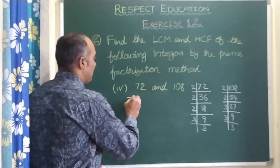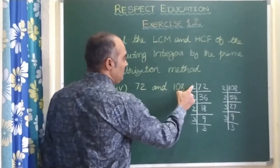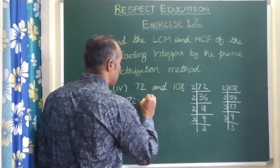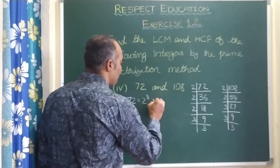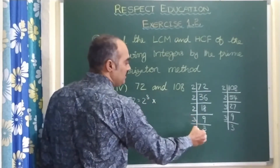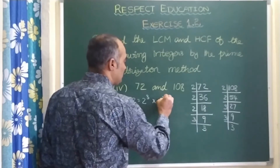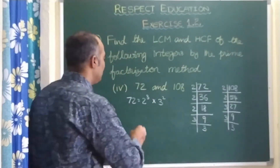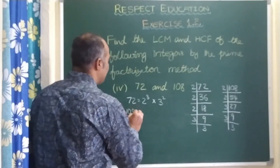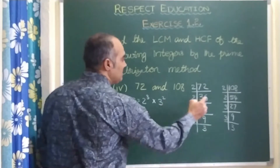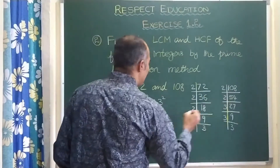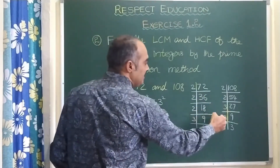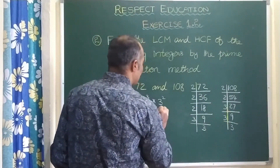So write 72 as: 2 power 1, 2, 3 — so it is 2 cube into 3 square, since 3 appears 2 times. Now 108 means 2 square into 3 cube, since 3 appears 3 times.